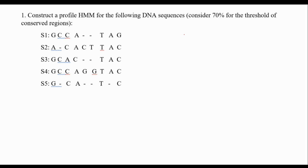Let's go through it in detail and construct the whole profile HMM together with its probabilities. The question says: construct the profile HMM for the following DNA sequences, consider 70% as the threshold for the conserved regions. So we need this threshold to understand which parts we consider conserved regions. When we say 70%, I look at my sequences — I have five sequences, which means at least four of them should have the same letter to consider it a conserved region.